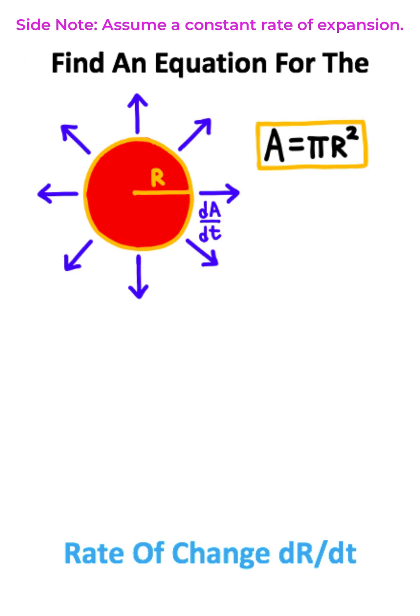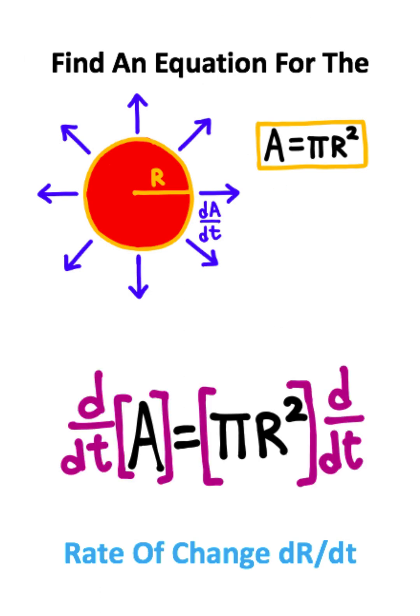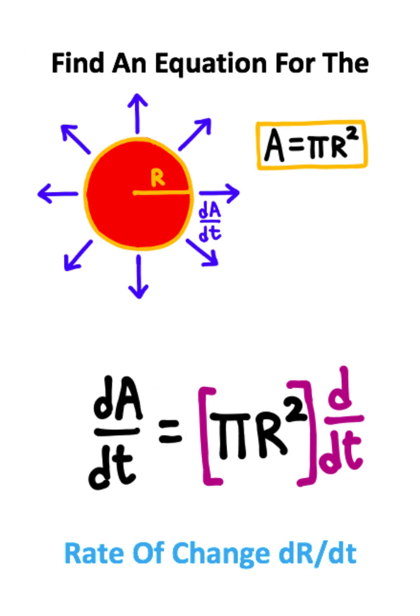Now to solve this problem I'm going to use the area of the circular disk, which is pi times the radius of the disk squared. I'm going to take the time derivative on both sides of this equation. Now the time derivative of the area is simply going to be dA over dt.